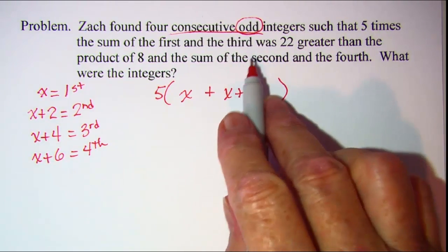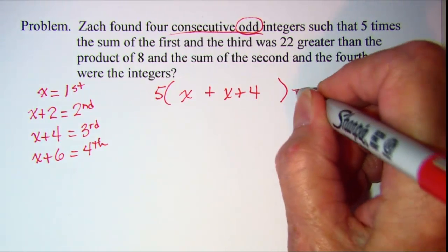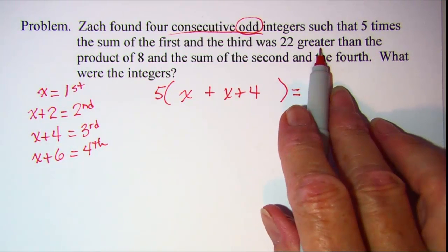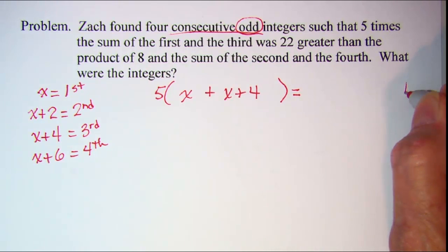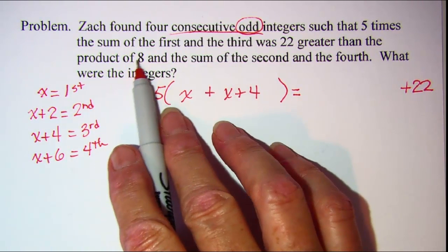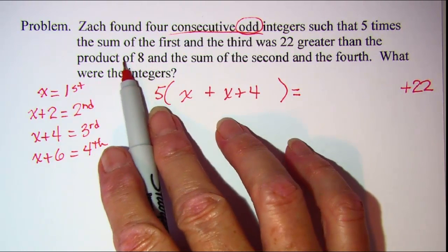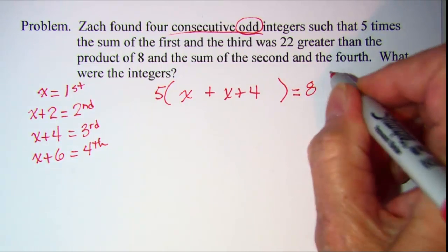Then was. That's our verb. So that's where the equals goes. 22 greater means we're going to be adding 22 onto something. The product of 8 and something. So product means multiply. We're multiplying 8 and something.